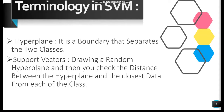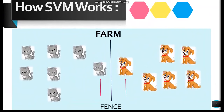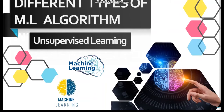Two key terminologies in Support Vector Machine: first is hyperplane — a boundary that separates two classes. Second is support vectors. When you start with SVM, you draw a random hyperplane and then check the distance between the hyperplane and the closest data points from each class. These closest data points are known as support vectors. That is where the name 'Support Vector Machine' comes from.